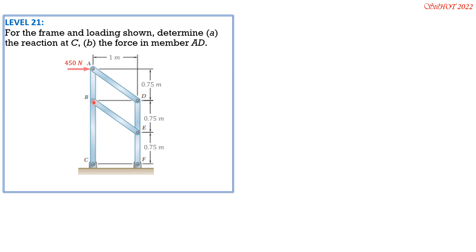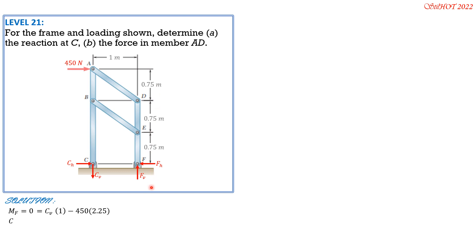Considering the whole system, let's place the component reactions as shown. We set the moment at F equal to zero, counterclockwise positive. This gives C_V times 1 minus 450 times 2.75 times 3 equals zero, so C_V equals 1012.5 Newtons, directed downward.